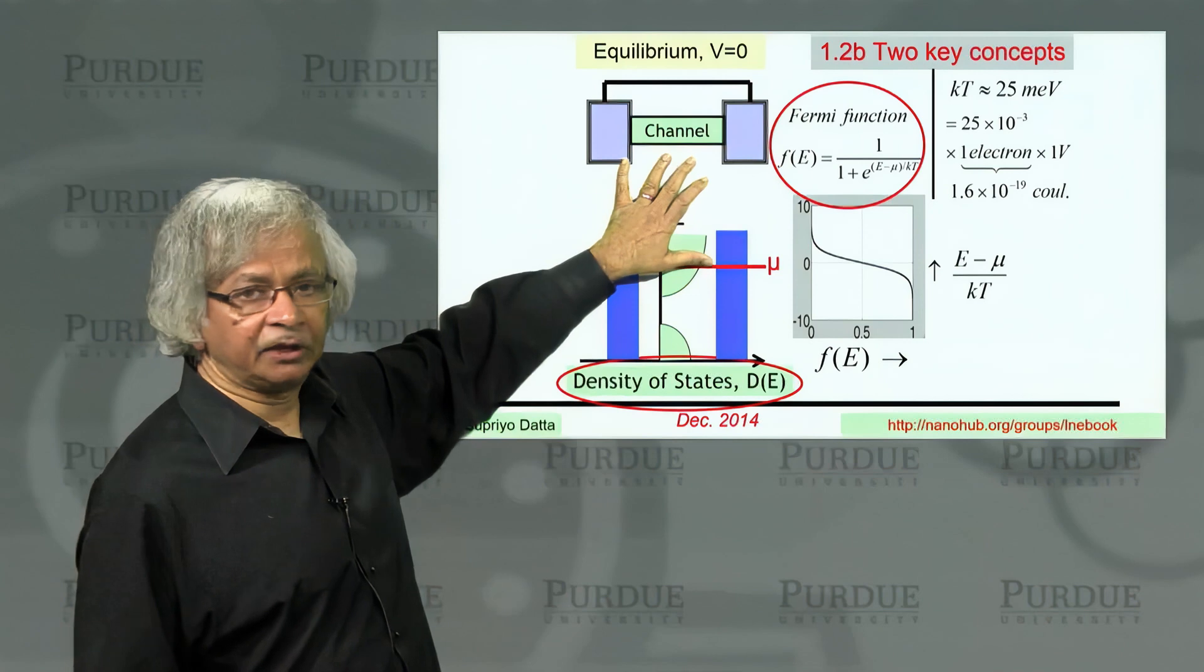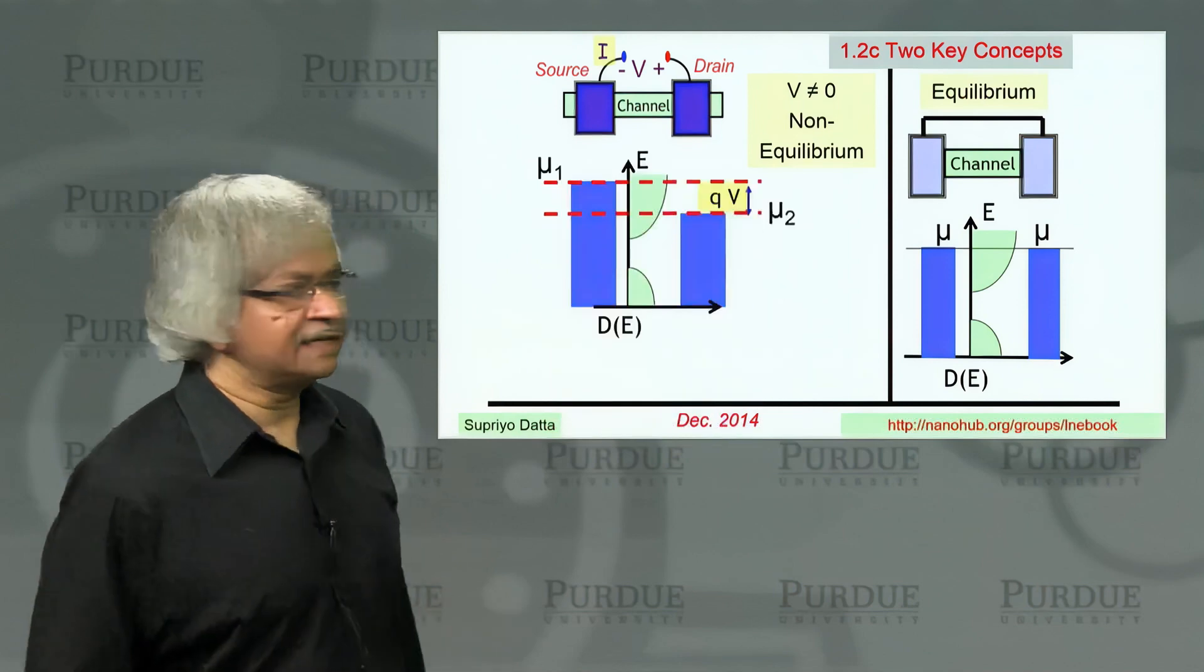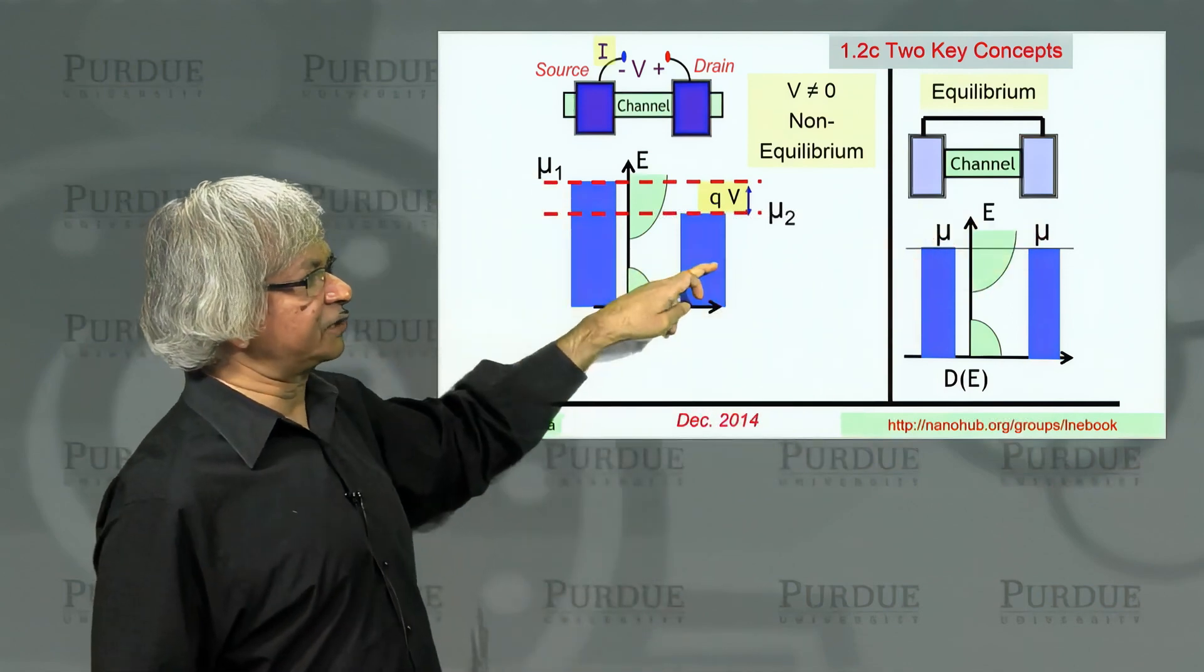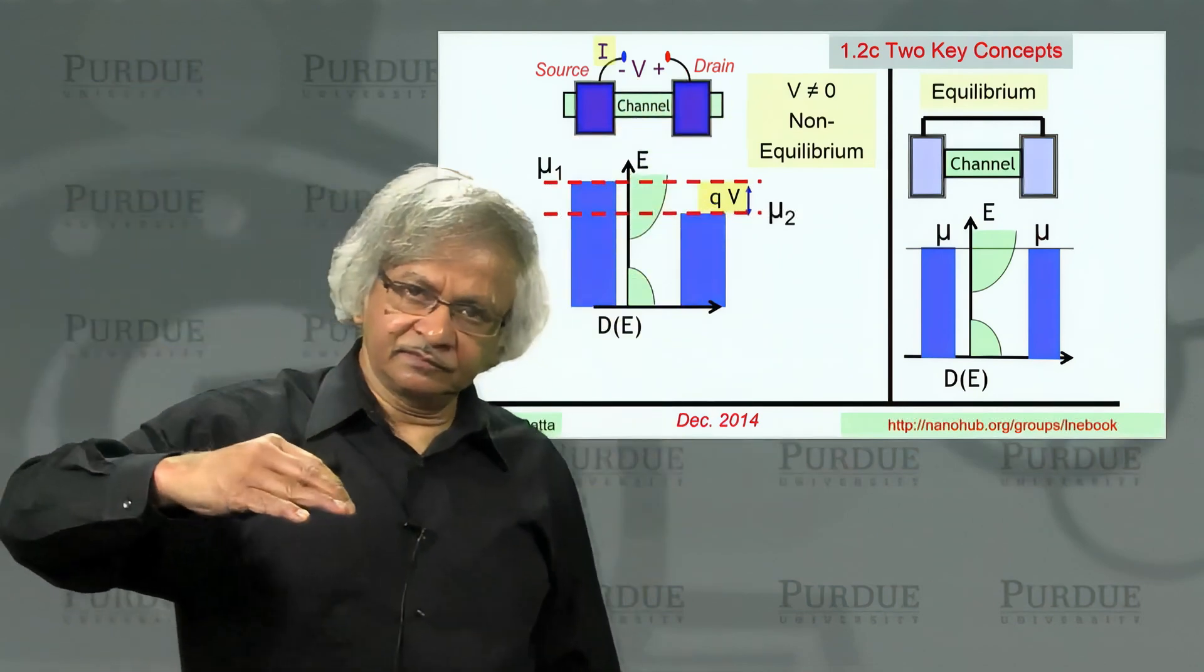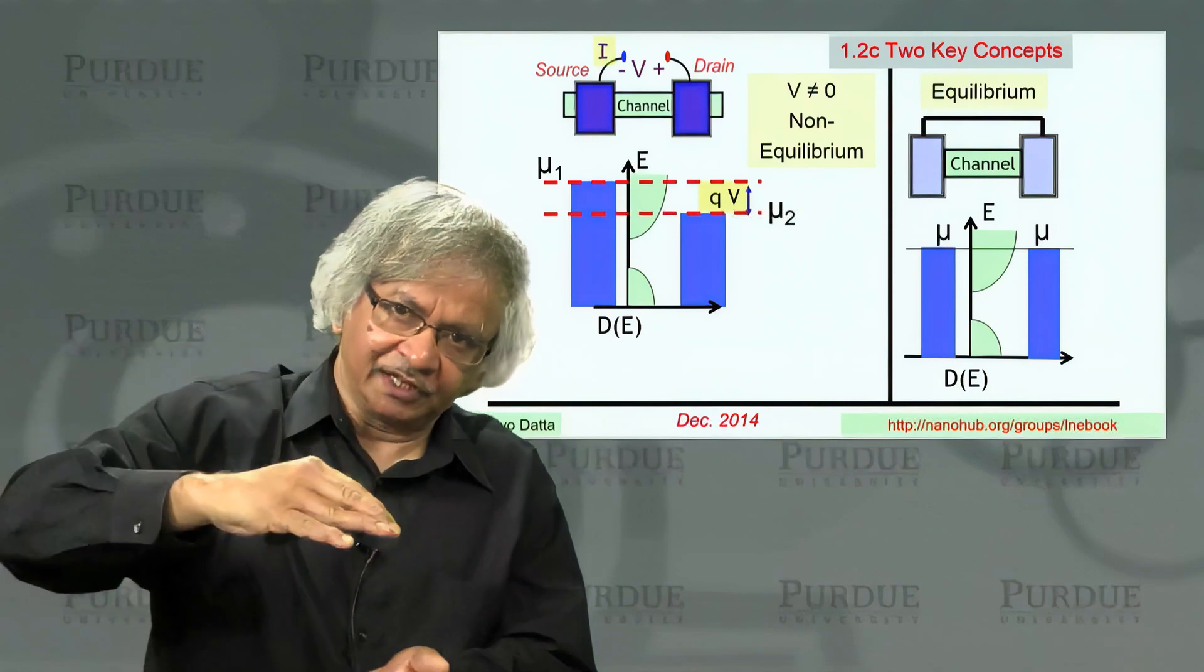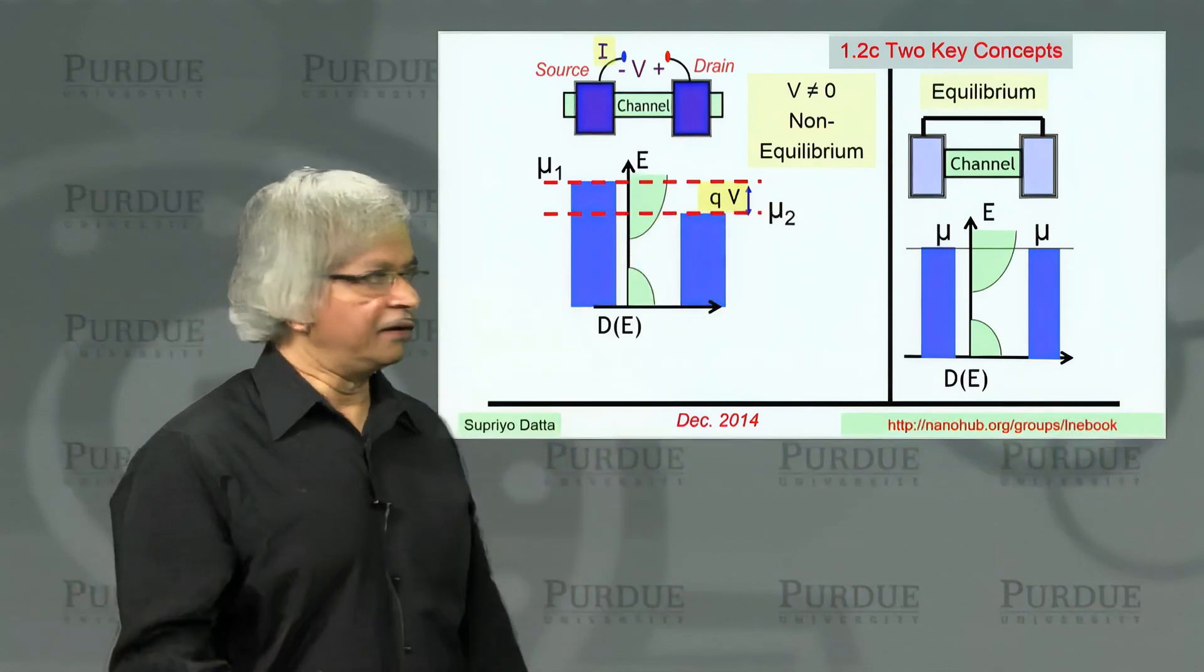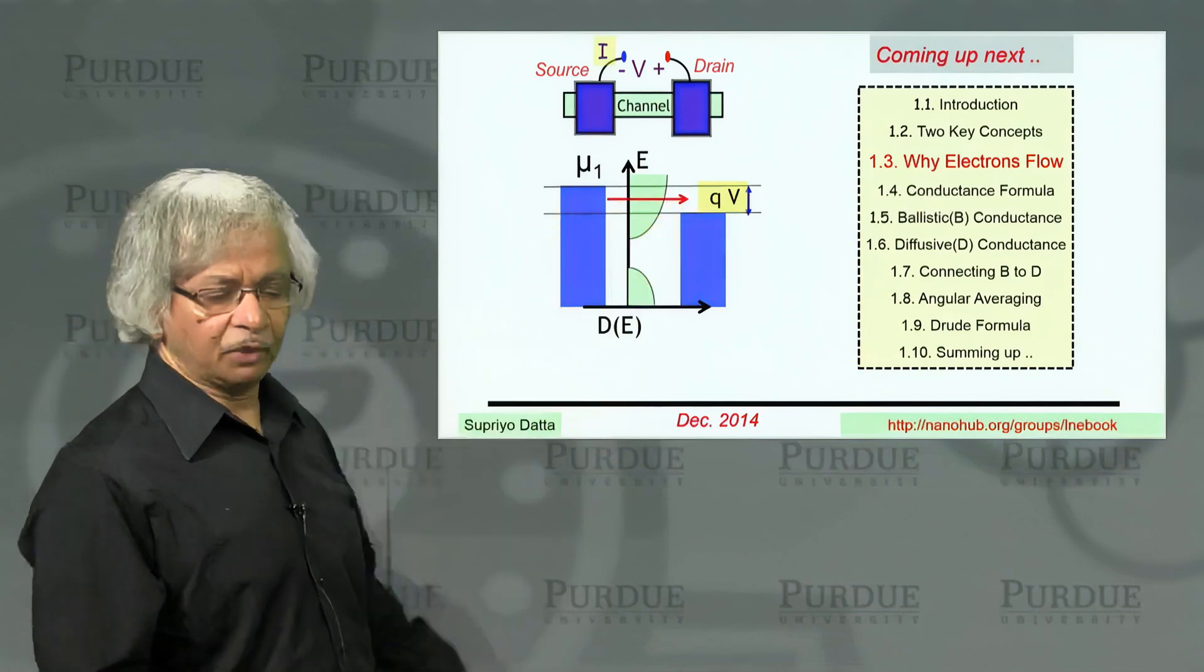We talked about what the picture looks like at equilibrium. If you apply a voltage, go away from equilibrium, then what happens is the two contacts, instead of both having the same electrochemical potential, they shift with respect to each other. Because when you have applied a voltage, the positive side, all the energies, including the electrochemical potential which tells you how far they are filled, everything sinks, everything goes down. That's why on this side, everything is lowered by QV. So this is the picture then that we'll use in our next lecture to discuss a formula for current. We'll talk about how electrons flow. Thank you.